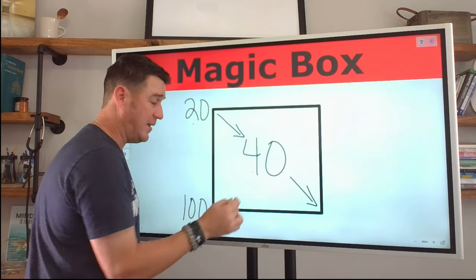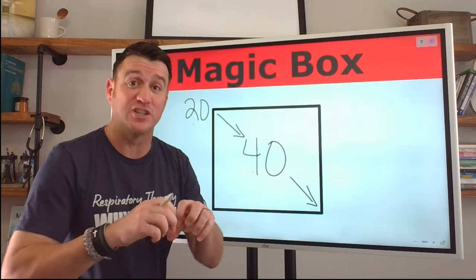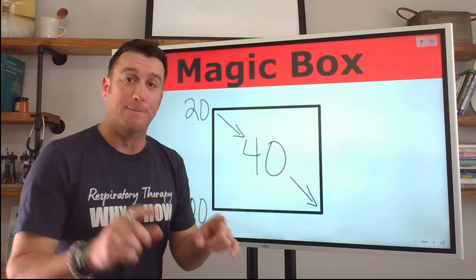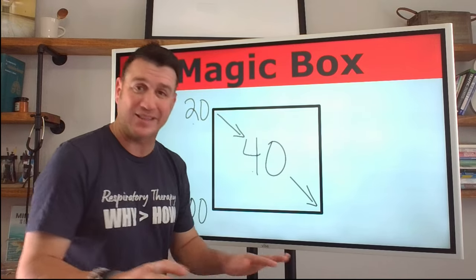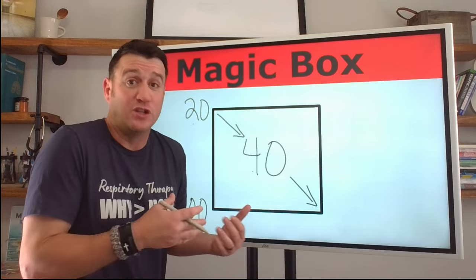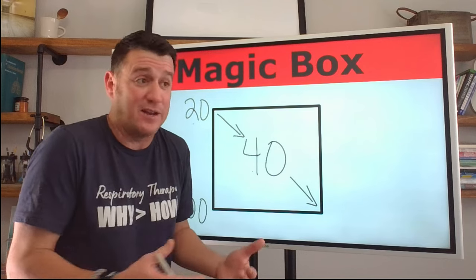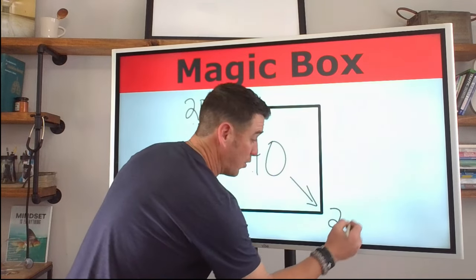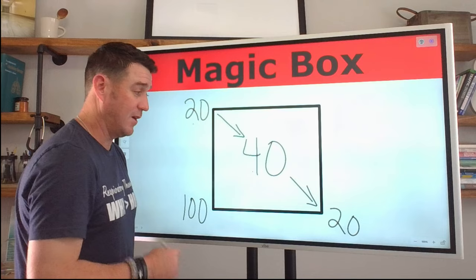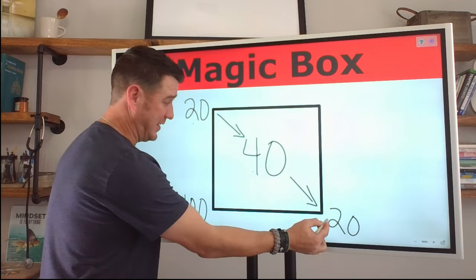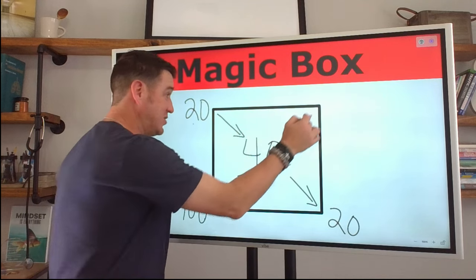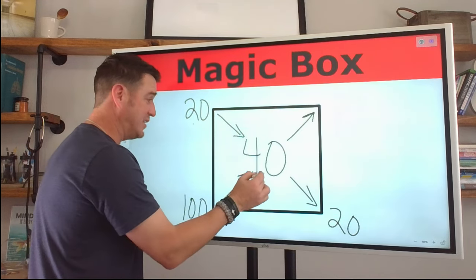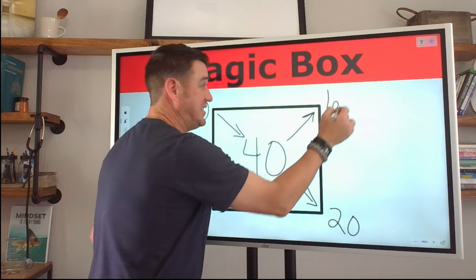Now what we're going to do now is we're going to diagonally subtract these two numbers. So we're going to do 20 minus 40. Now 20 minus 40 gives us a negative 20, but Egan says, disregard the sign. We don't care about the negative. So we just know that 20 minus 40 is negative 20. So right here, we're going to say 20. So we work diagonally.